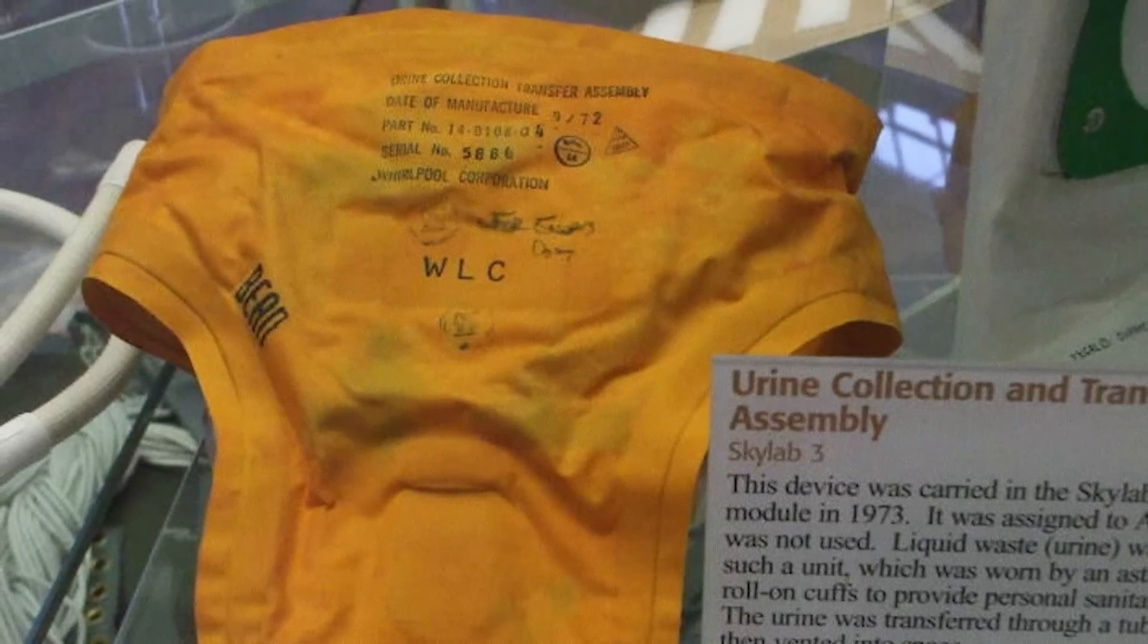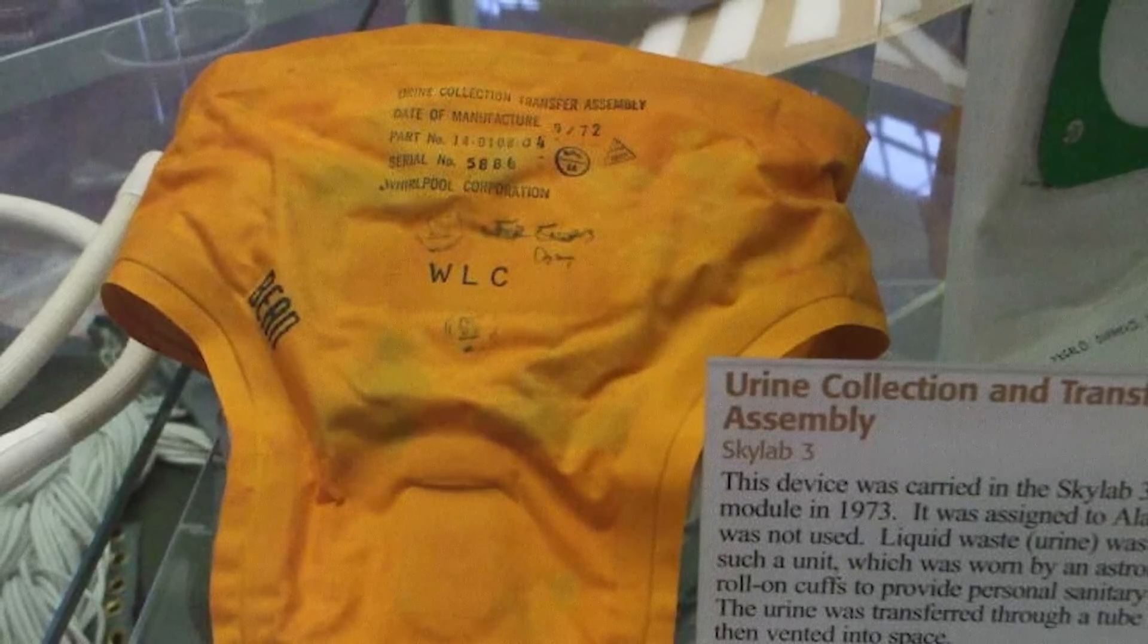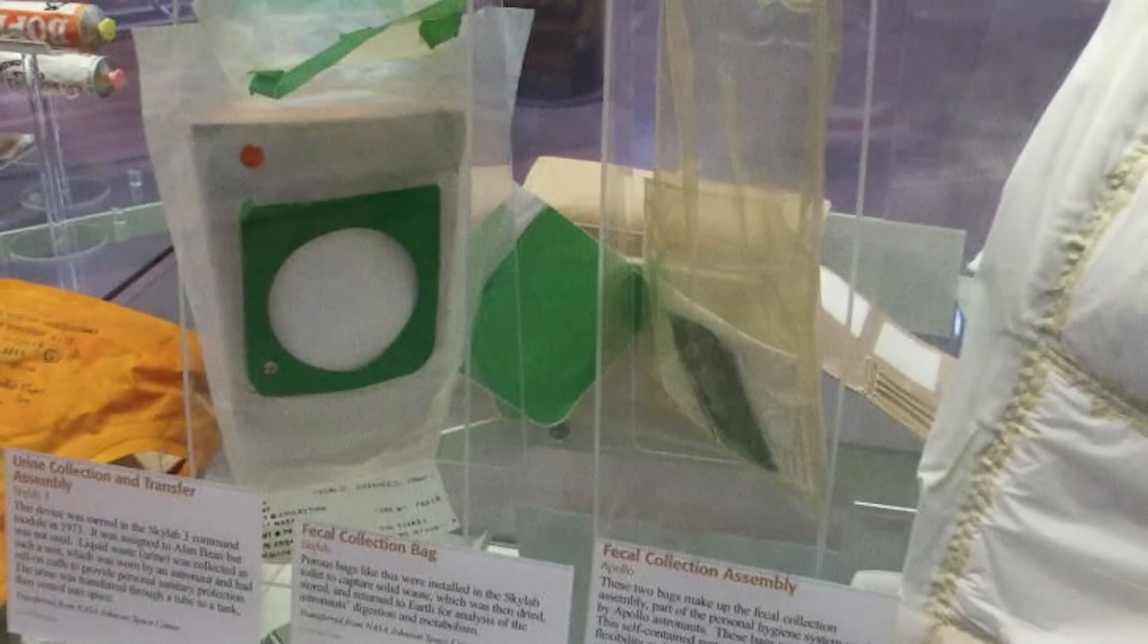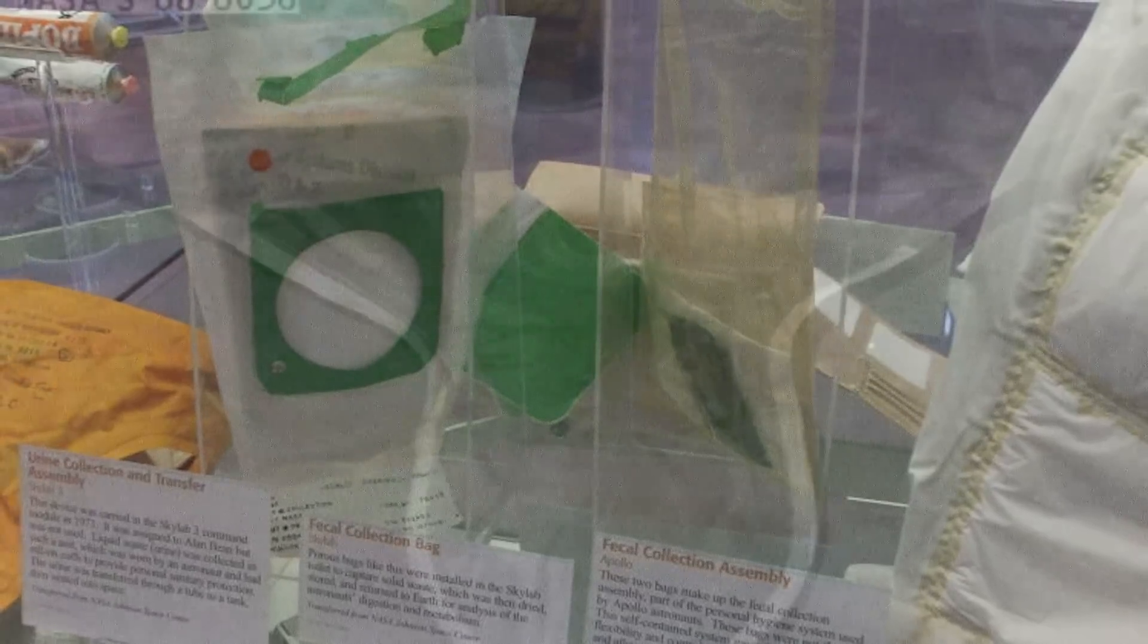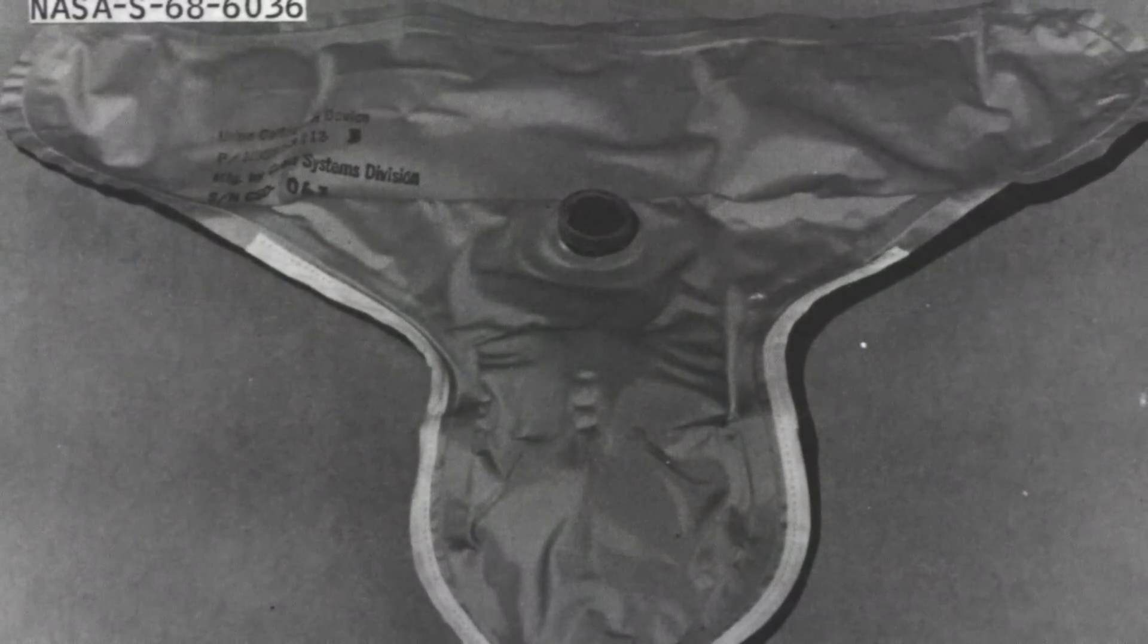This same condom hose and wastebag system was used by astronauts through the 1960s and early 70s. All of the people being launched into space were male, so that kept things pretty simple in that regard, though there was an added complication that arose from this system.